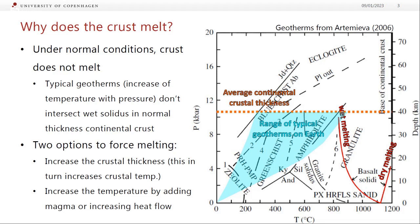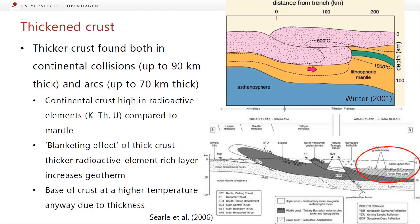So if we want to force the crust to melt, the two options would be: we can increase the thickness of the crust, and then these geotherms would carry on and eventually cross the wet solidus. Or we can increase the temperature of the crust, which is just moving in this direction. And we can do that by adding fresh magma from the mantle, which is hot, or by increasing the heat flow to the crust.